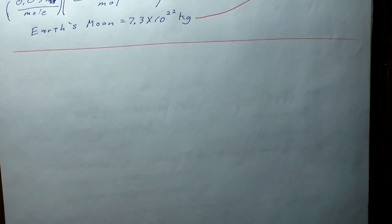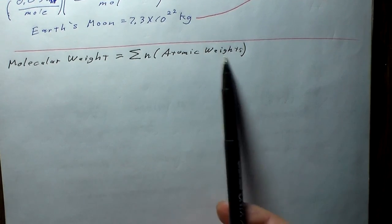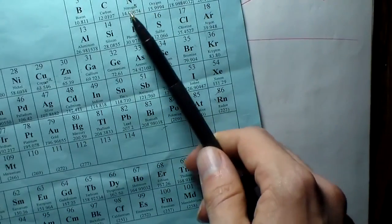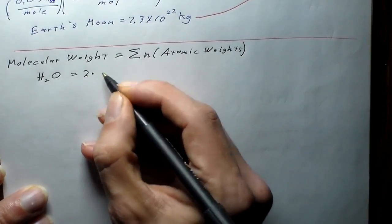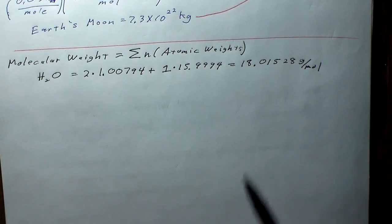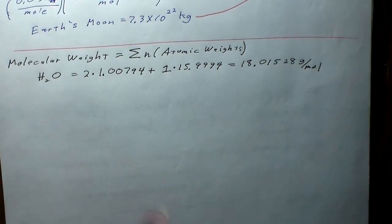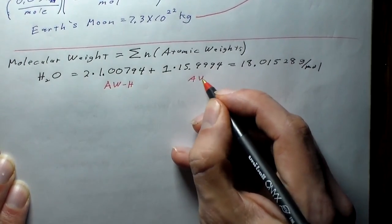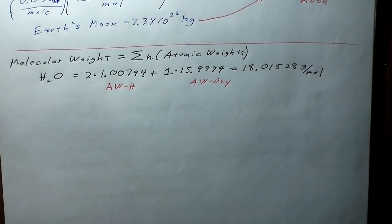To calculate molecular weight, sum the number of each type of atom multiplied by its atomic weight from the periodic table. For water: 2 × (atomic weight of H) + 1 × (atomic weight of O) = 2(1.00794) + 15.9994 = 18.01528 grams per mole.